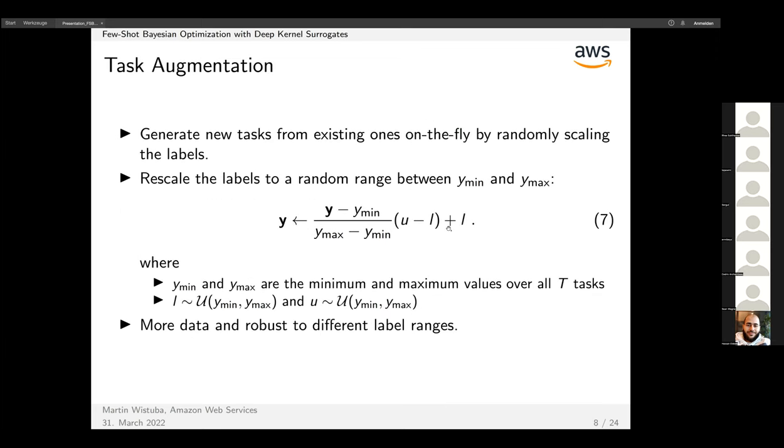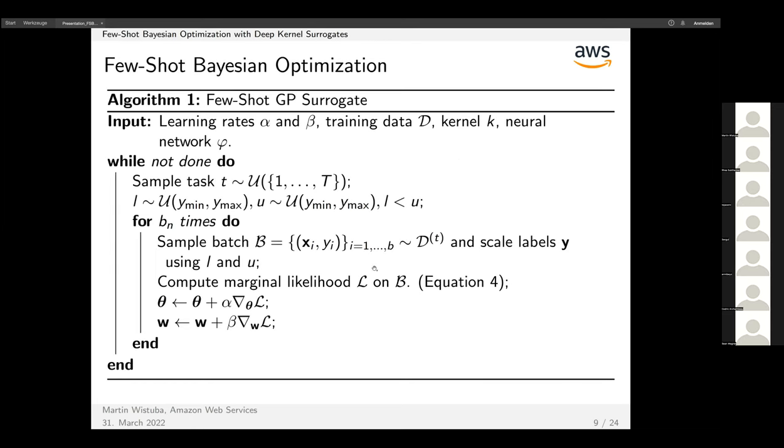The task augmentation I mentioned earlier is something we do on the fly when training. Given one task between some upper and lower threshold, we rescale it to have a new upper and lower threshold. However, the ordering doesn't change—it's literally just messing with the y's without changing the ranking. This allows us to come up with random tasks which are still based on real tasks.